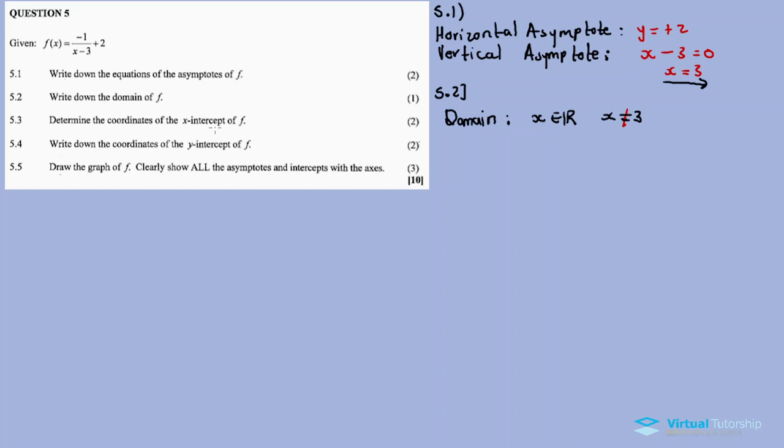5.3: determine the coordinates of the x-intercept of F. For the x-intercept, we let y equal zero, so F of x equals zero and solve for x. Negative 1 over (x minus 3) plus 2.